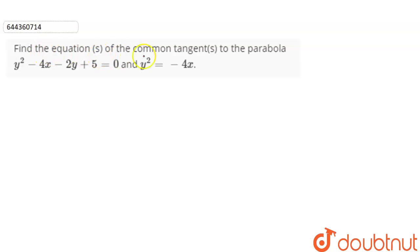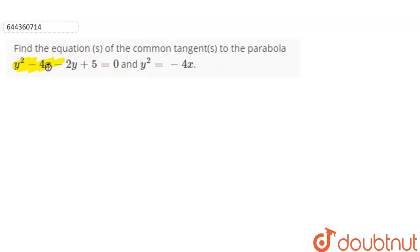Find the equation of the common tangents to the parabola y² - 4x - 2y + 5 = 0 and y² = -4x.